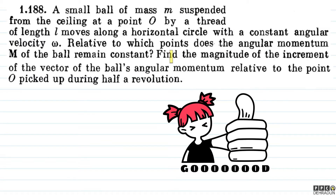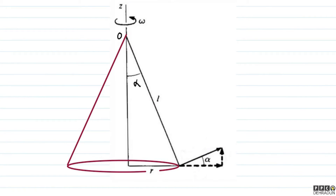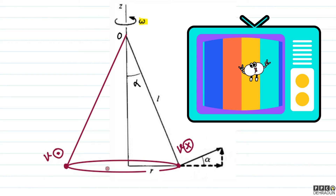Now for part two: find the magnitude of the increment of the angular momentum vector about point O during half a revolution. Let's say at the initial moment the particle is at one position, and after half a revolution it reaches the final position. The speed is constant, but the velocity direction changes — it comes out of the screen at the initial moment.